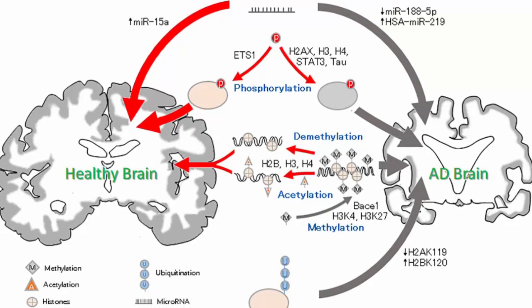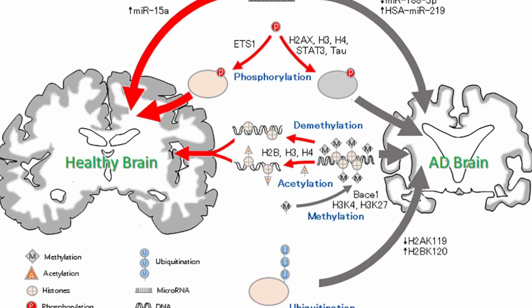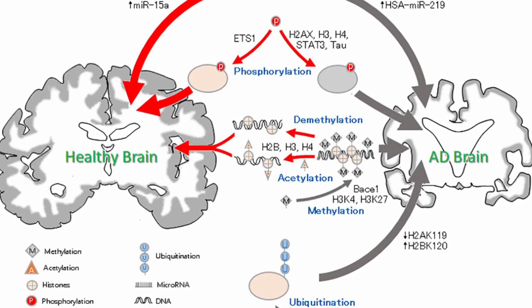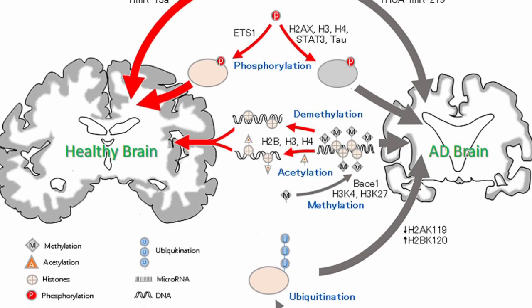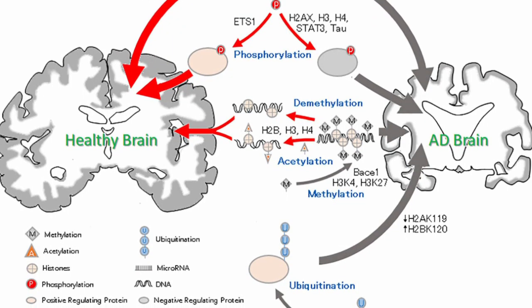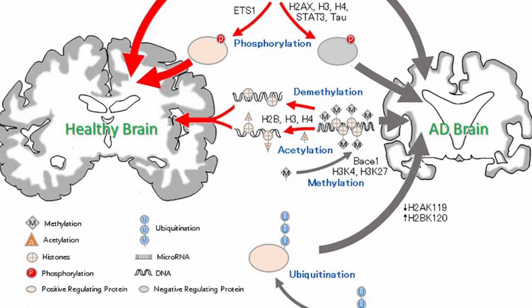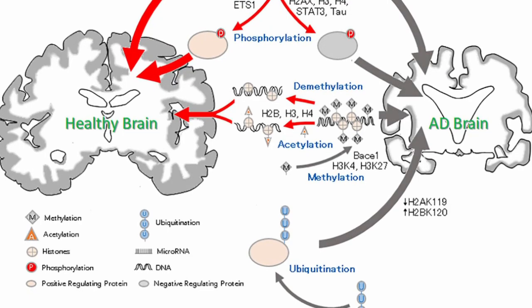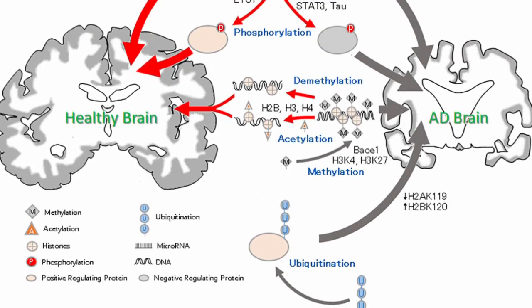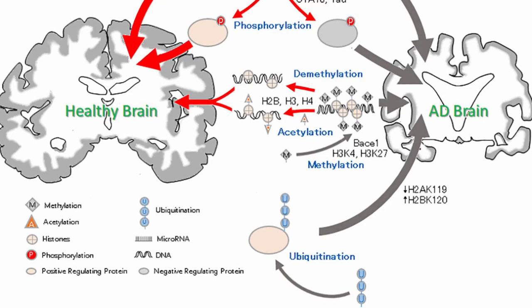Aberrant DNA methylation patterns have been observed in genes relating to amyloid precursor protein processing, tau protein regulation, and inflammation — all of which are key factors in Alzheimer's pathogenesis. As age is the single most significant factor in the development of Alzheimer's disease, tackling the aging process is the single best way to help eradicate this disease, rather than trying to fight it once it has already manifested.